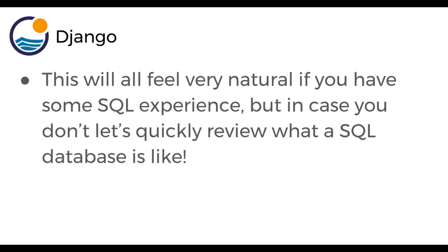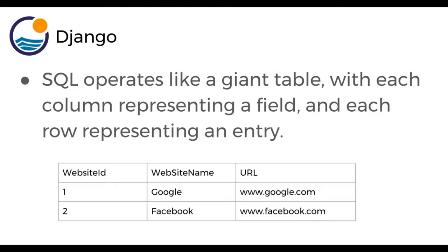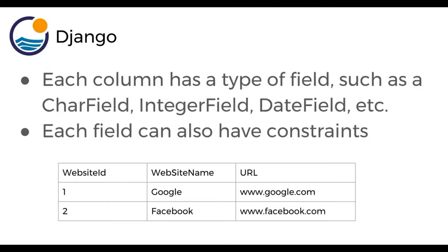This will all feel very natural if you already have some SQL experience. But in case you don't, let's quickly review what a SQL database looks like. SQL basically operates like a giant table — if you're familiar with Excel or spreadsheets in general, SQL operates in a very similar fashion, with each column representing a field and each row representing an individual entry or data point. So here we can see a table has a website ID, a website name, and then a URL. Each column has a type of field as well, such as a character field, an integer field, or a date field, and each field can also have constraints.